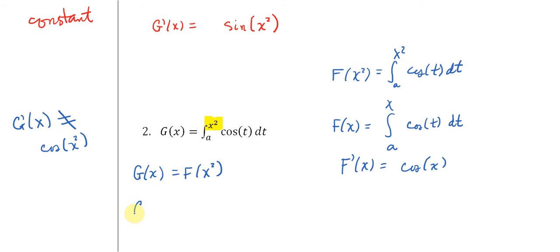So now we take the derivative of both sides. g prime, then, is equal to, and now you have to be careful because we have the chain rule in action. f prime of x squared times the derivative of the inside function, which is 2x. But what is f prime of x squared? Well, we're taking x squared and we'll plug it into here. So we get cosine of x squared times 2x.